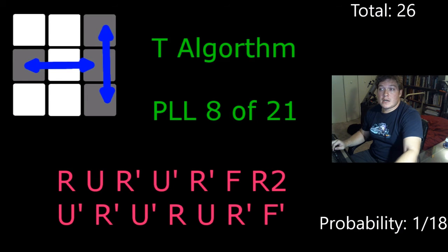T algorithm. This could happen in all four different directions and they'd be distinct on all four different faces. So one 18th probability, 26 cases.